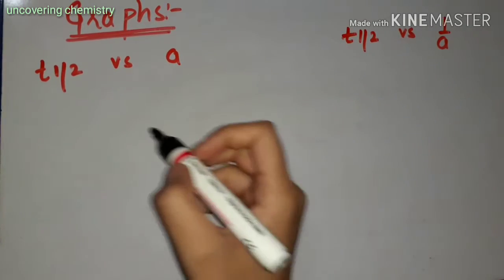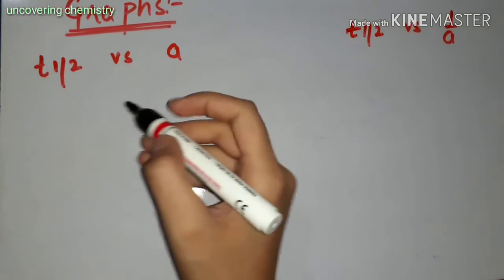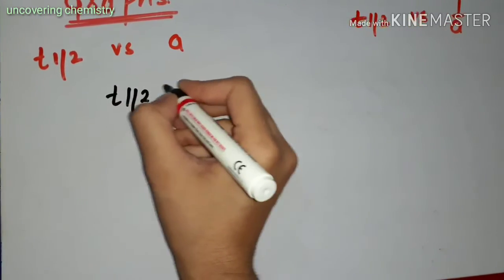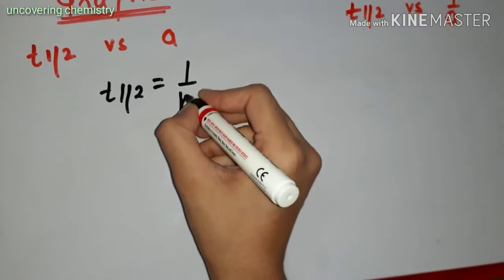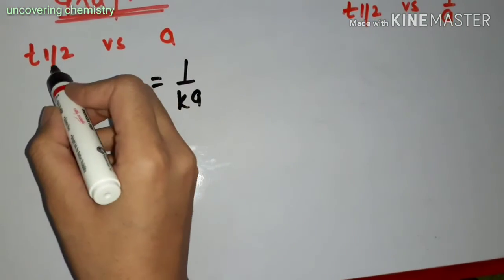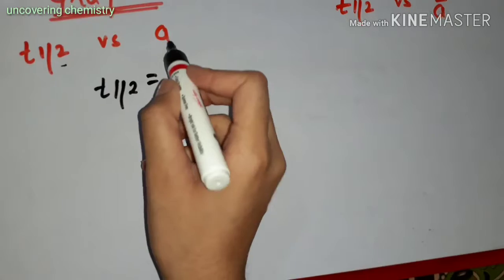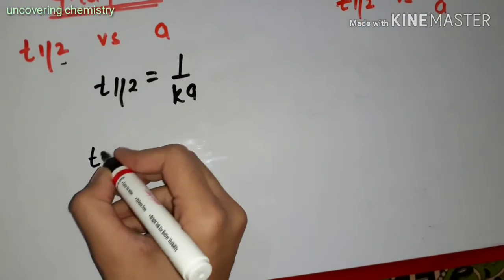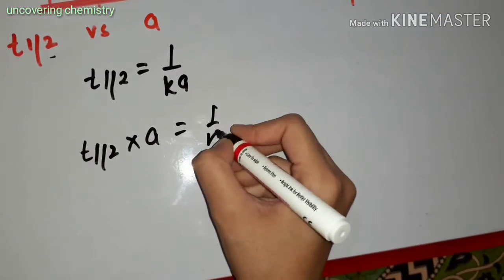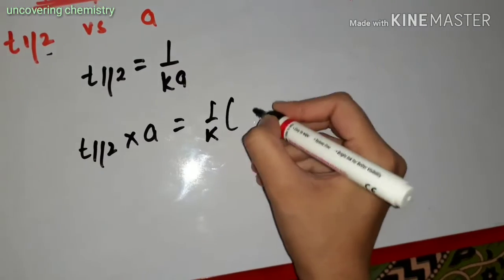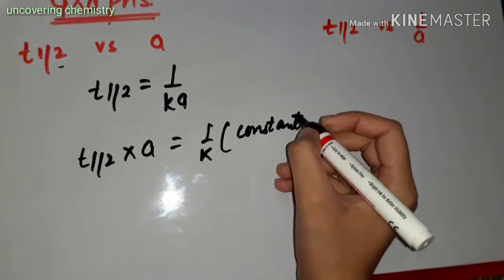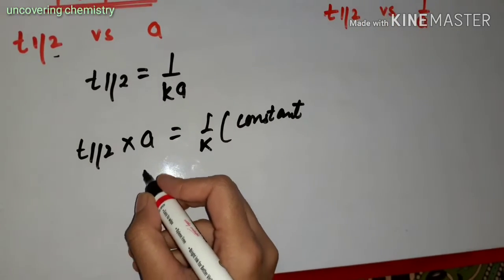The next graph is for the half-life. For the second order reaction, the half-life is equal to 1 upon K times A. We draw the graph between T-half versus A. From the equation, T-half times A equals 1 upon K, which is a constant. So the graph is a hyperbola.